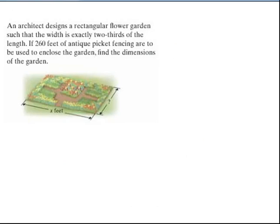Let's look at something else. Here we have one that says, an architect designs a rectangular flower garden such that the width is exactly two-thirds of the length. If 260 feet of antique picket fencing are to be used to enclose the garden, find the dimensions of the garden. That means that they want the length and the width when we're done.